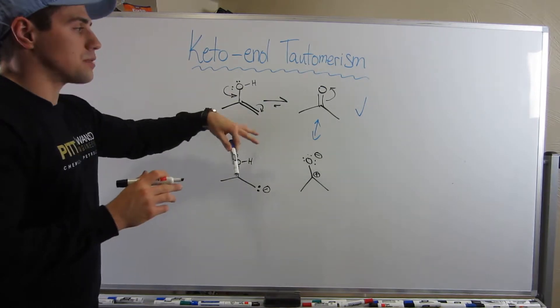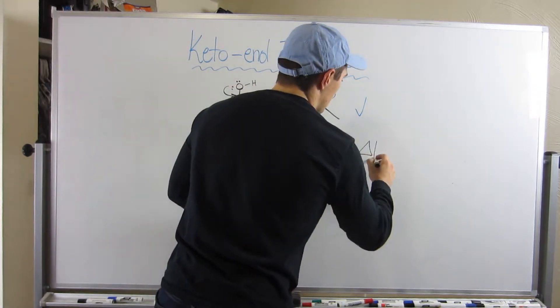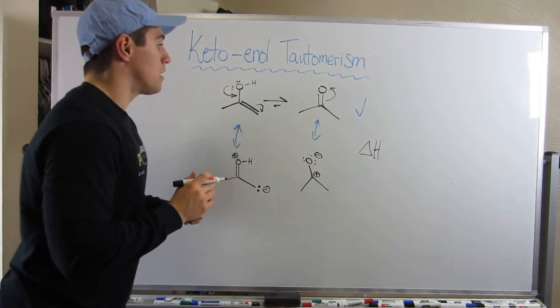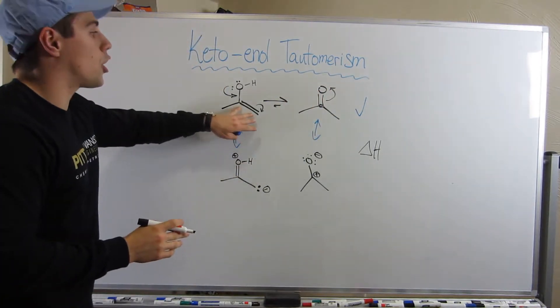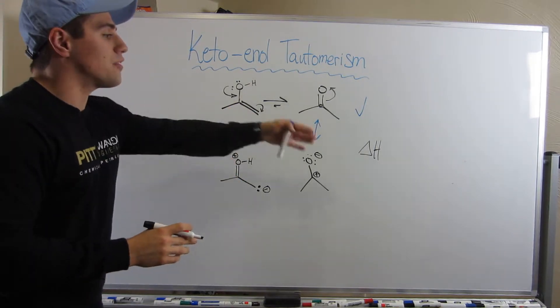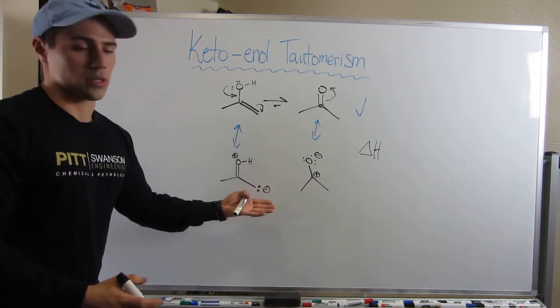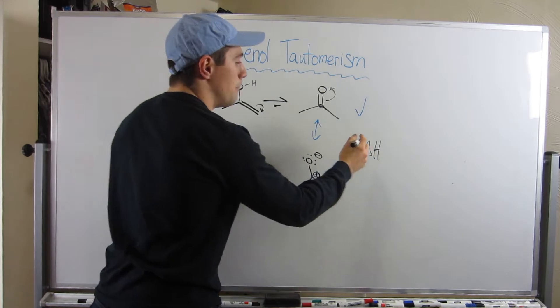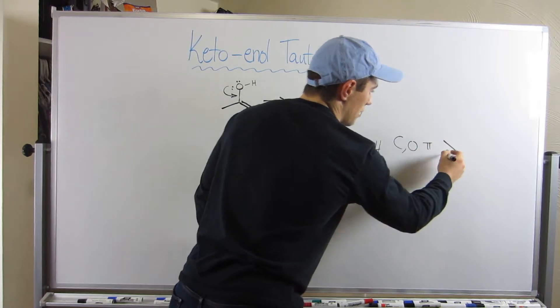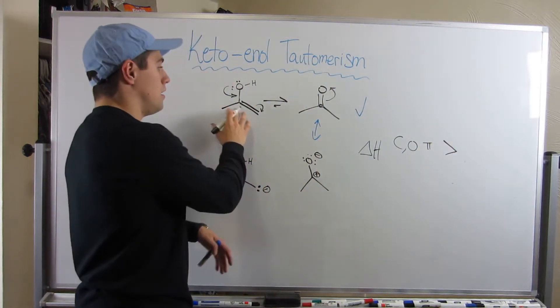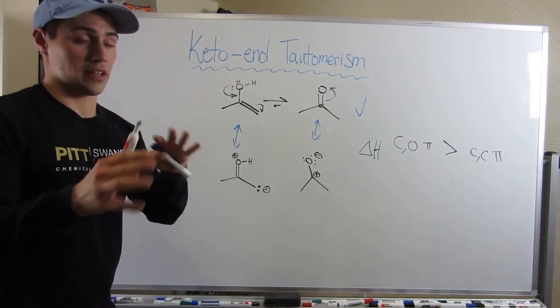And besides resonance, from an enthalpy standpoint, from a just an H perspective, this carbon-oxygen double bond is more stable than this carbon-carbon double bond. So from an enthalpy standpoint, that's why the ketone is favored. So there are two reasons: the resonance tells a story, but you can also say from an enthalpy perspective, the carbon-oxygen pi bond is more stable than the carbon-carbon pi bond.